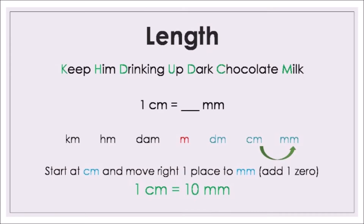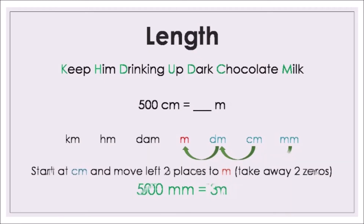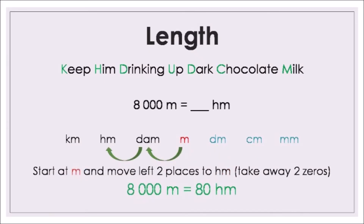One centimetre is how many millimetres? Go to centimetre, moving to the right — add one zero, multiply by 10. One centimetre is 10 millimetres, and you can see those measurements on your ruler. Now going the other direction: 3,000 millimetres is how many metres? Go to millimetres, move three places to the left — divide by 1,000 or take away three zeros. 3,000 millimetres is 3 metres. 500 centimetres is how many metres? Move two places to the left, divide by 100. 500 centimetres is 5 metres. 8,000 metres is how many hectometres? Move two places to the left, divide by 100. 8,000 metres is 80 hectometres.